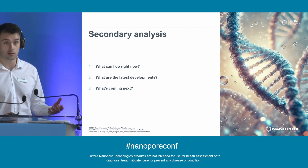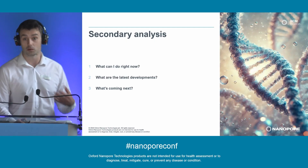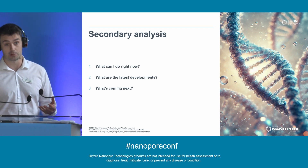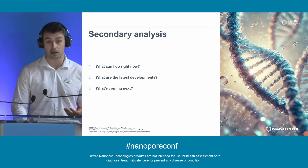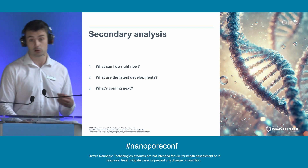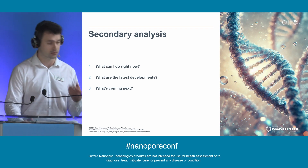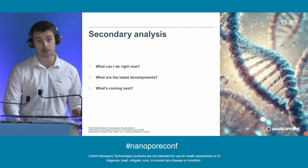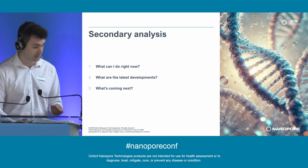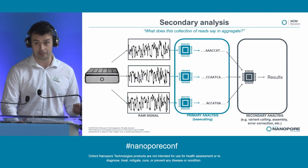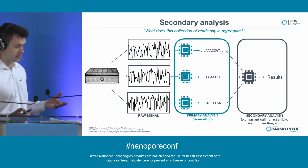There are a couple of things I want to talk about today. Firstly, what's out there right now - what kind of secondary analysis can we do with our reads, and what software should we be using? Then we'll look at some of the latest developments, specifically the variant calling performance of our new v5 models and our TTT human assembly protocol. In the final part of the talk, we'll look to the future, where we've been having success with new neural network architectures for consensus polishing. But first, I should define what I mean by secondary analysis.